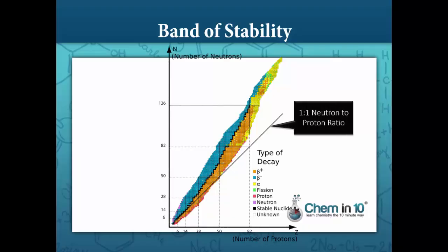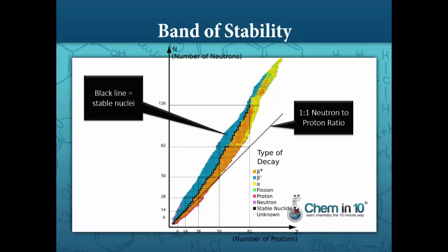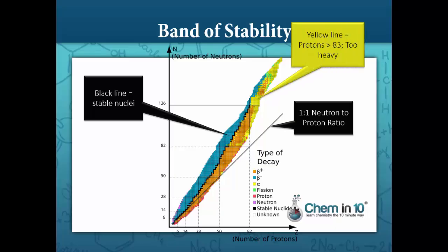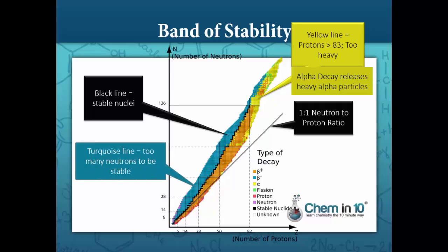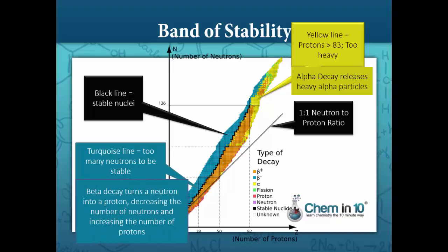The band of stability can also help us determine which type of radioactive decay an unstable isotope will undergo. If the neutron-to-proton ratio lands in the yellow area, it means that the isotope is too heavy, and will release alpha particles to reduce its size. Isotopes that land in the turquoise area have a larger neutron-to-proton ratio than is considered stable, so they need to get rid of some neutrons through beta decay, in which a neutron turns into a proton and an electron, thereby decreasing the number of neutrons and increasing the number of protons. By lowering the neutrons in the numerator and raising the protons in the denominator, it lowers the neutron-to-proton ratio.